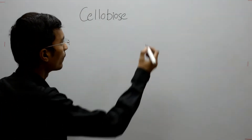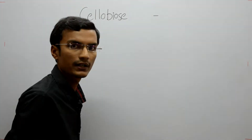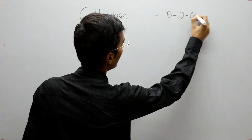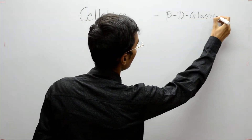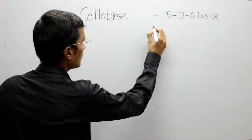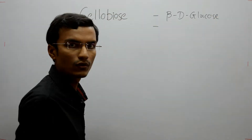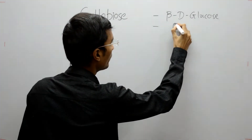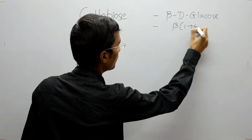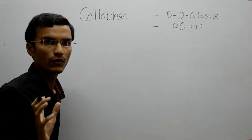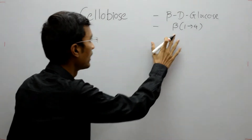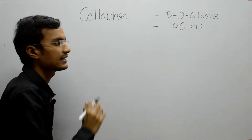Cellobiose is a disaccharide and it is made up of beta-D-glucose molecules. These beta-D-glucose molecules are linked to each other with a beta-1,4 bond. So when two beta-D-glucose molecules are linked to each other with a beta-1,4 bond, it forms the cellobiose disaccharide.